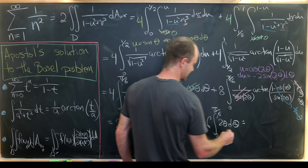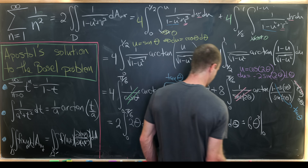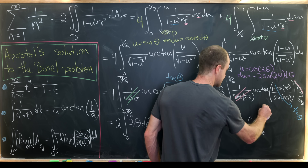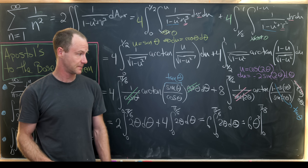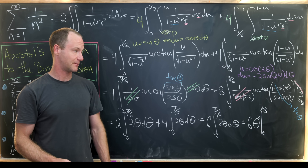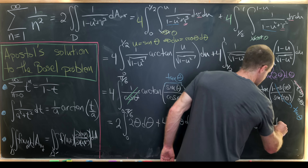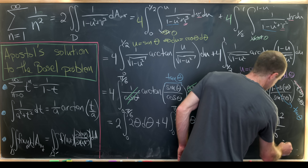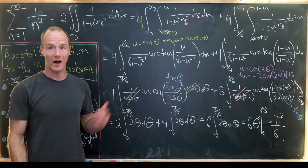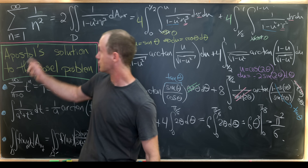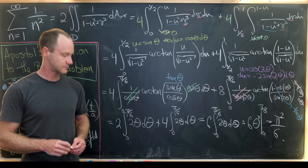Adding the two integrals gives 6 times the integral from 0 to π/6 of 2θ dθ, which equals 6 times θ² evaluated from 0 to π/6. Evaluating at π/6 and multiplying by 6 gives exactly π²/6, which is of course the well-known value of the sum of reciprocals of squares. And that's a good place to stop.